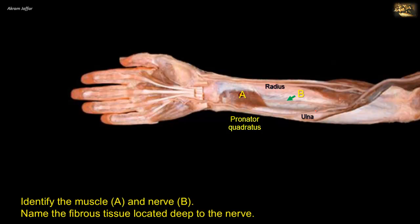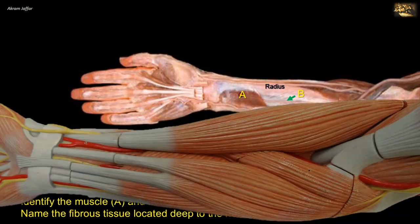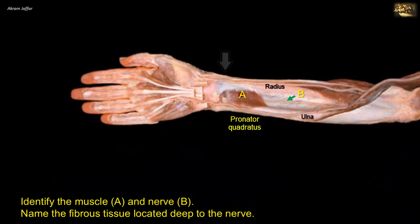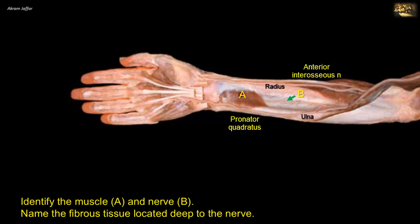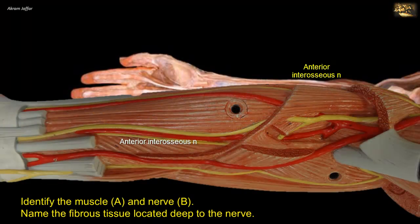Pronator quadratus initiates pronation, but pronator teres is used when more speed and power is required. The pronator quadratus muscle also helps the interosseous membrane to hold the radius and ulna together. The nerve B lying immediately in front of the interosseous membrane is the anterior interosseous nerve, derived from the median nerve. It supplies the pronator quadratus and the other muscles of the deep group of the flexor compartment: the flexor pollicis longus and the lateral half of flexor digitorum profundus.